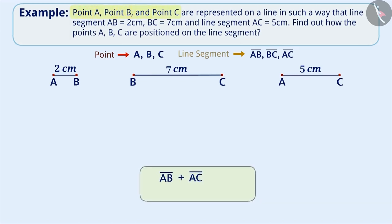Since these three points are on a line, the sum of two line segments is equal to the third line segment. If we look closely, AB plus AC is equal to BC.